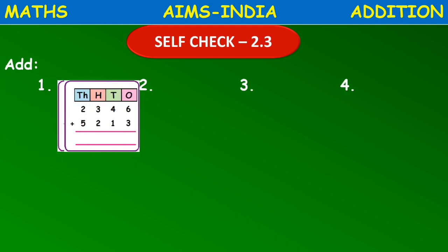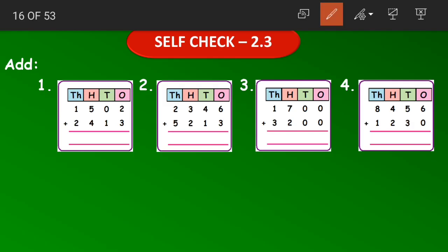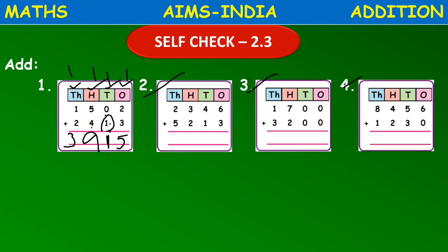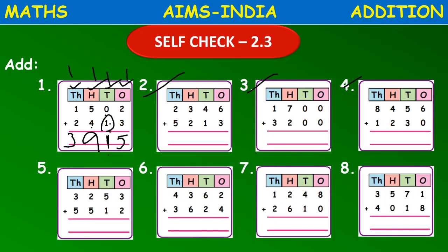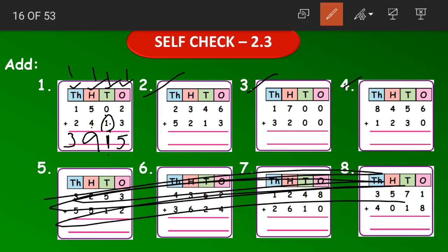Self-check: here are more questions. I will solve question 1. In the ones place, 2 plus 3 is 5. In the tens place, 0 plus 1 — when we add any number to 0 the answer is that number — so 0 plus 1 is 1. In the hundreds place, 5 plus 4 is 9. In the thousands place, 1 plus 2 is 3. Try solving questions 2, 3, and 4 — you can pause and copy the questions into your notebook.